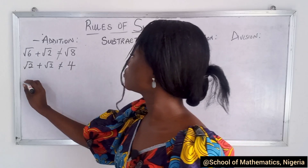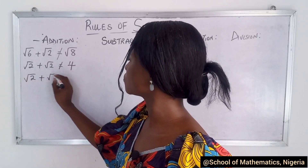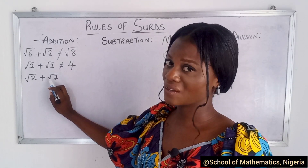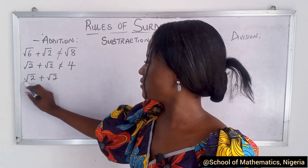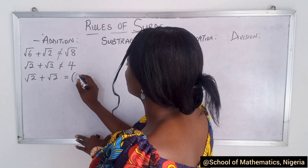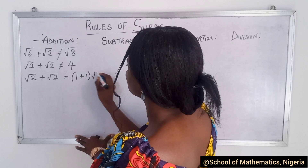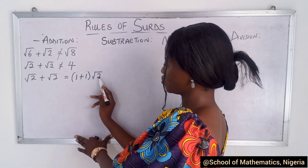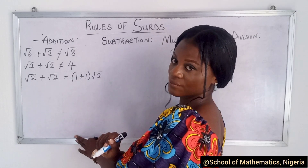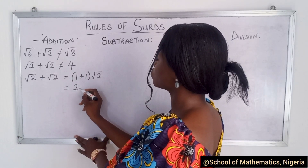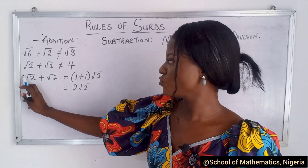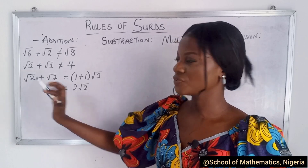For root 2 plus root 2 we have similar radicals, but we're dealing with what is outside. So what do you have outside? It's 1 plus 1, with root 2 as the common factor — root 2 times 1 is root 2, and root 2 times 1 is root 2. So you have 1 plus 1, which gives you 2 root 2. That is how we solve addition in surds.